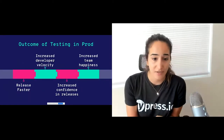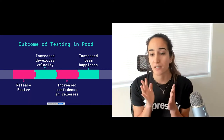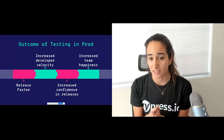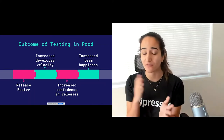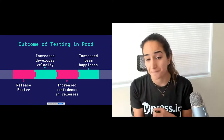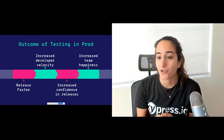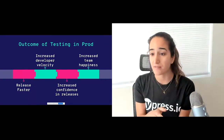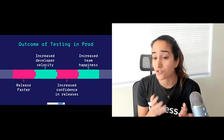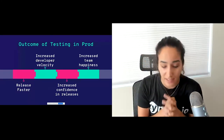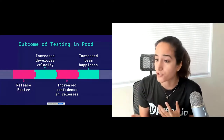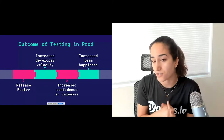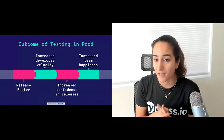The outcome of testing in prod is really amazing. You're able to release faster because you're not tied to a specific release cycle — you can just push a button. With feature flags, you're separating code deployment from feature release, so you have the ability to release whenever you want. You also get increased developer velocity — developers spend more time creating new features and less time fixing bugs, because those bugs are caught much earlier in the development lifecycle. You have increased confidence in releases because you know your features are working in the environment they'll live in, not a dummy environment. And obviously this makes the team really happy — it increases your engineering culture and overall team happiness.